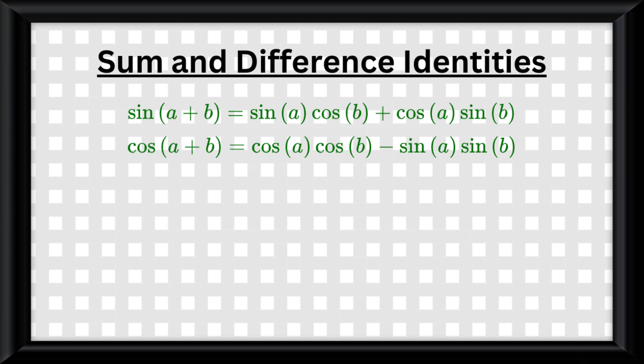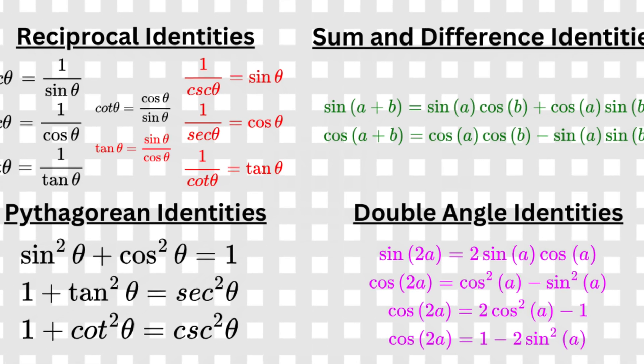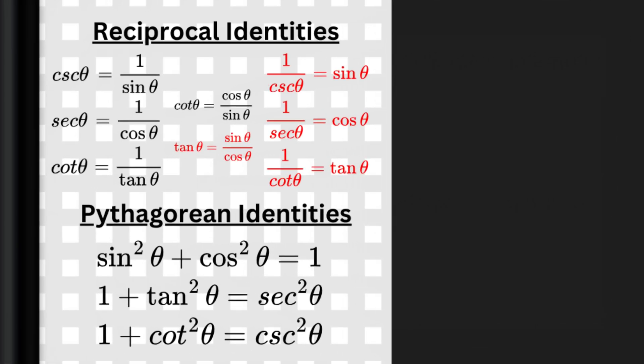You also need to memorize these double angle identities. So that means in total, you need to memorize this screen of identities for this exam. And if you're wondering, this is why people say precalculus is harder than calculus. But I know you guys are lazy, so I'll just say, as someone who took this exam, these ones don't really matter, but definitely know these.